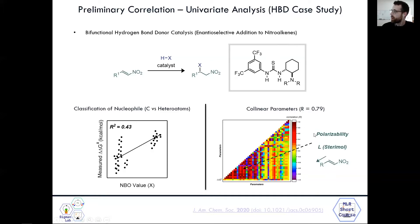Secondly, we can look at these polarizability and L-Sterimol terms for nitroalkenes. And we see they have a really high collinear score of almost 0.8. So they're effectively describing the same feature. So we really want to avoid having these two parameters in the same model.